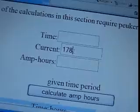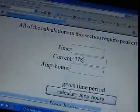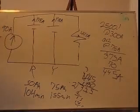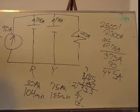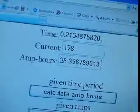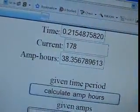And then I can do calculate amp hours based on current, given current, which is the button at the bottom. So calculate amp hours given amps. And when I click that, it showed me that that battery is able to produce 178 amps for 0.2 hours.